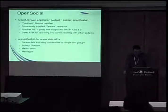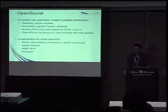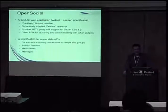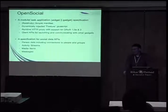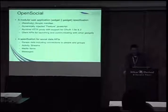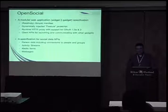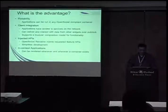OpenSocial is also a specification for social data APIs. First and foremost is person information — info about who's viewing it, about the subject of the page, and who they're connected to. In a business sense that's people they follow or people in the organization; socially it's friends, similar to Facebook. Activity streams are a first-class citizen in OpenSocial. We also have APIs for media items and messages.